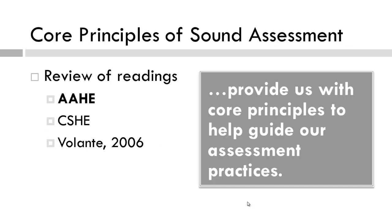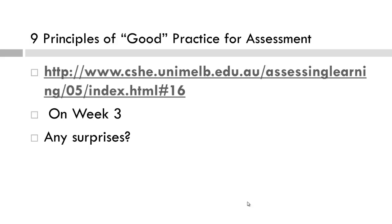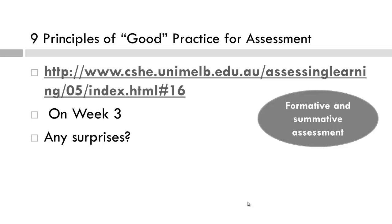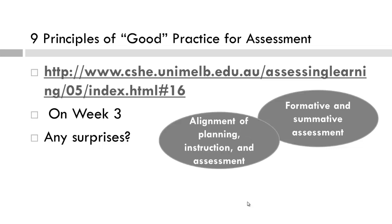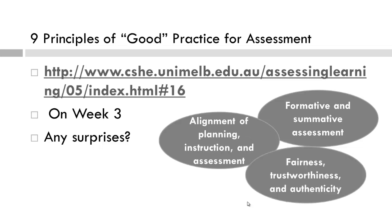Now we will look at the principles of sound assessment as put forth by the AAHE — the American Association for Higher Education. Once again, rather than read all nine guiding principles, please go to the URL you see on your screen. This is also available on Week 3 of the course website. Once you are finished reading the nine indicators, come back, finish viewing the rest of the video, and consider if they too reflect formative and summative assessment, the alignment of planning, instruction, and assessment, and fairness, trustworthiness, or authenticity. Come on back when you are done.